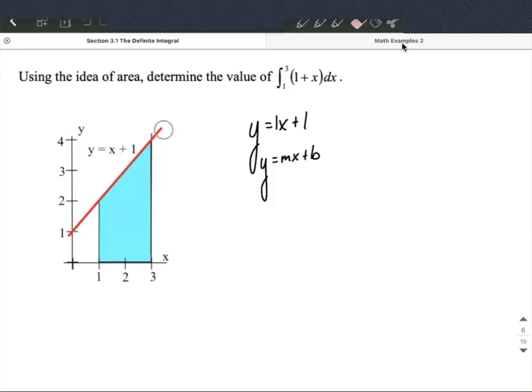All right, so 1 plus x, or x plus 1 is this line. Now, our bounds of integration are 1 and 3, so those are these x values on the x-axis here. And what we're trying to do is to compute this definite integral, we want to calculate what's the area for all the shaded region underneath that curve between 1 and 3.